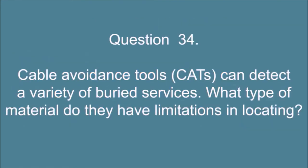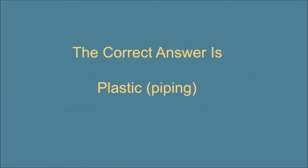Question 34. Cable avoidance tools (cats) can detect a variety of buried services. What type of material do they have limitations in locating? The correct answer is, plastic piping.